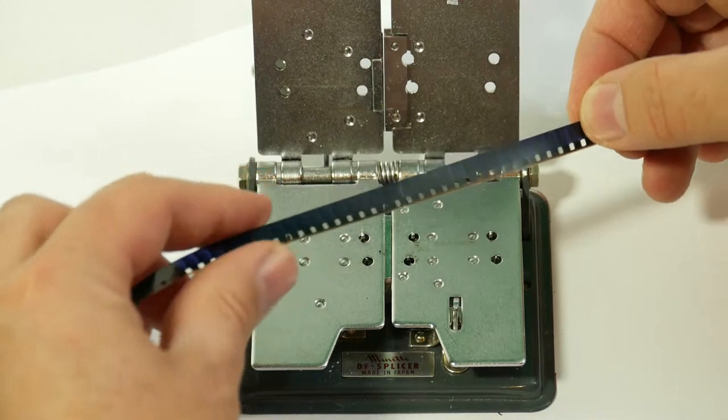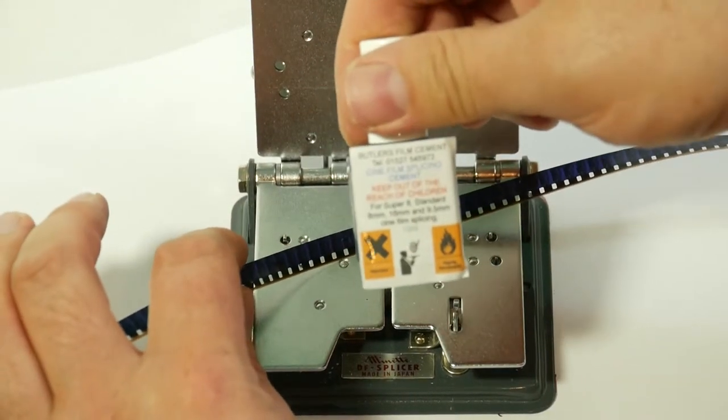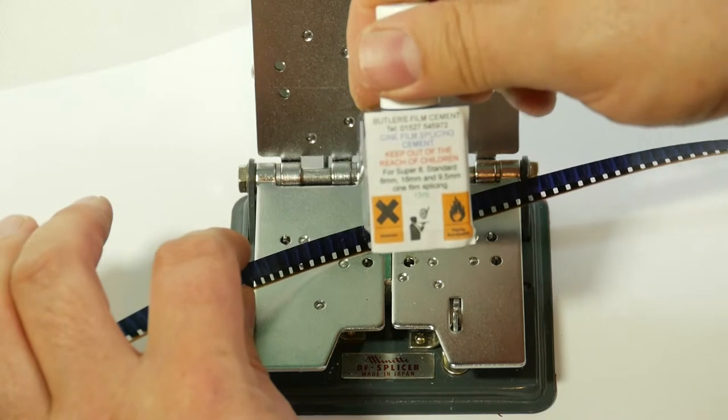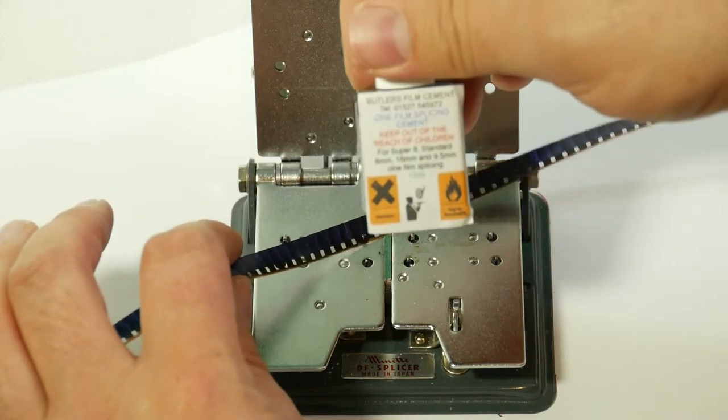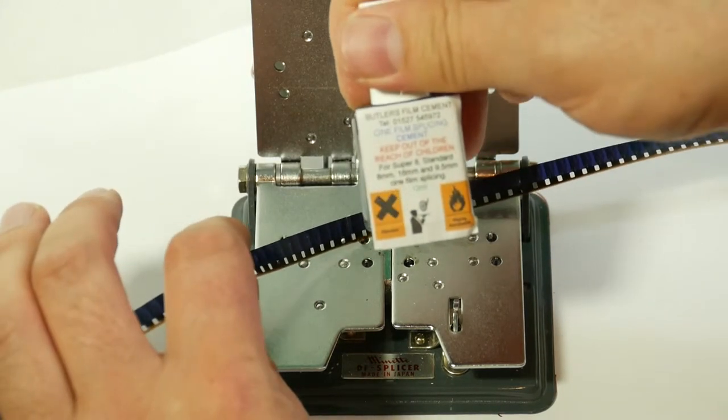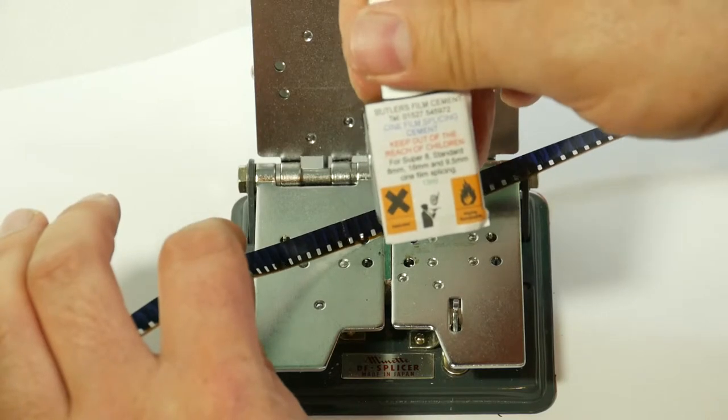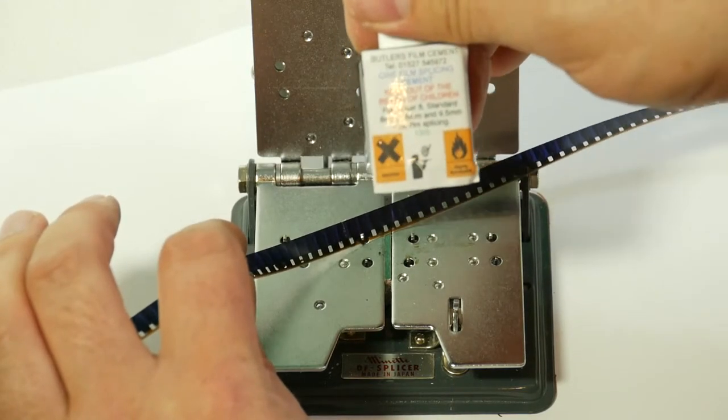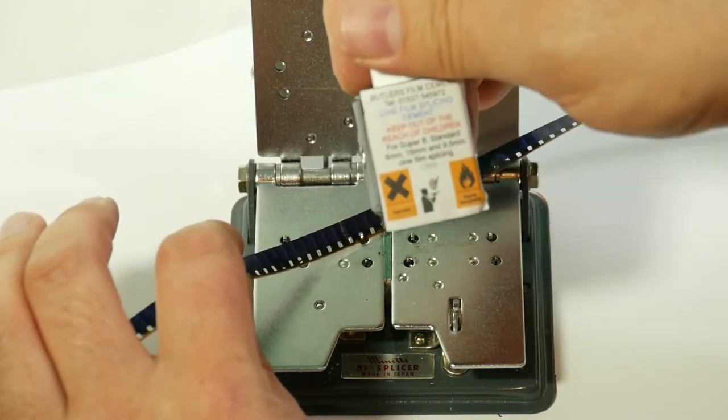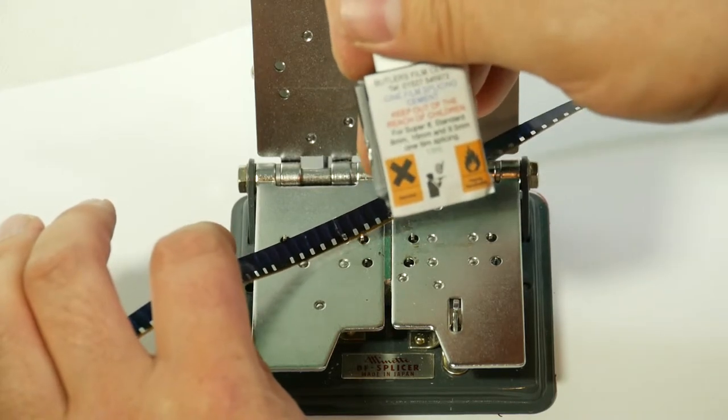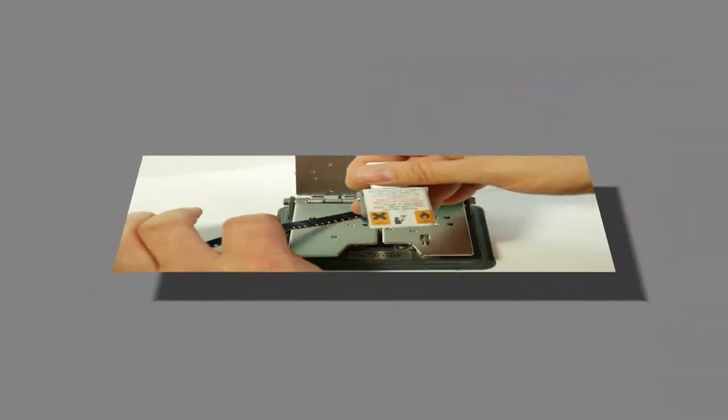So that's using Butler's film cement which is available on eBay. They only work on acetate film. Won't work on single eight cine film. It won't work with that at all. So make sure you've got acetate film, even 16mm, 9.5mm or standard eight and it'll work fine with that.